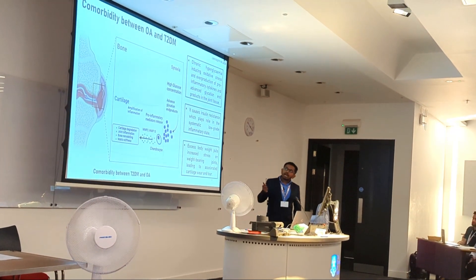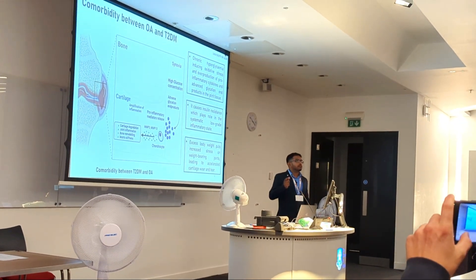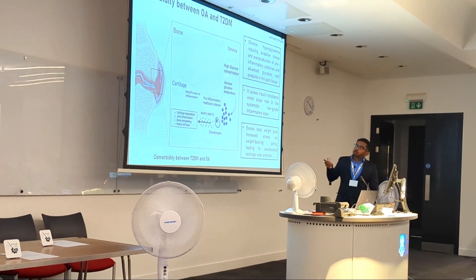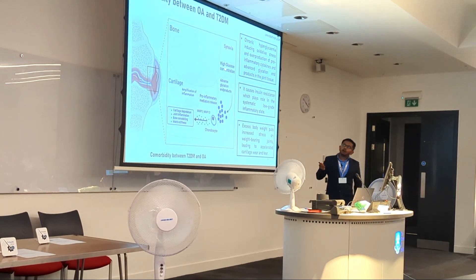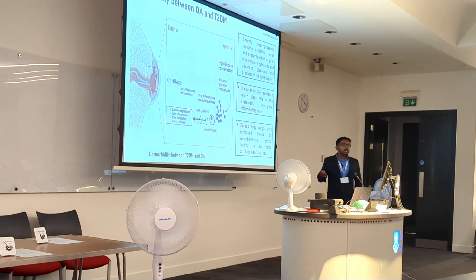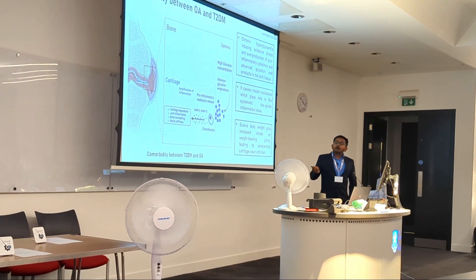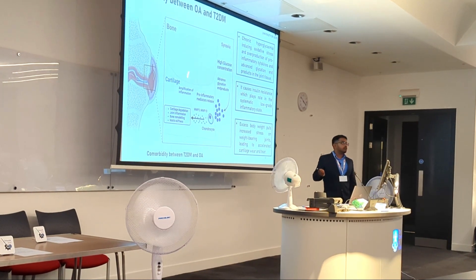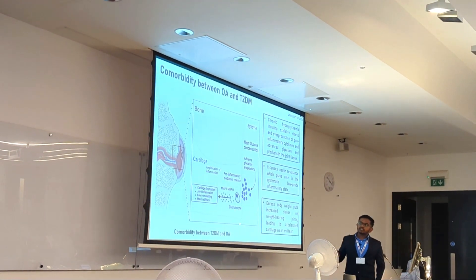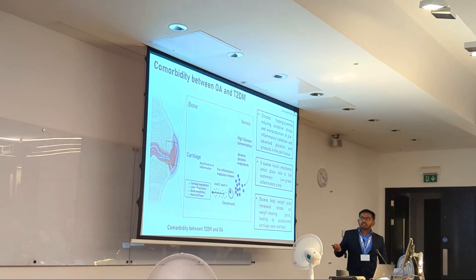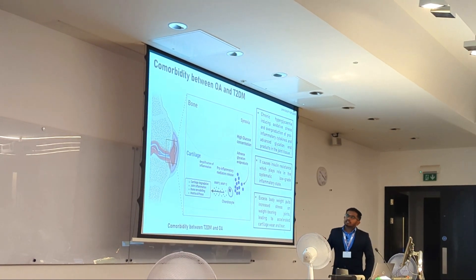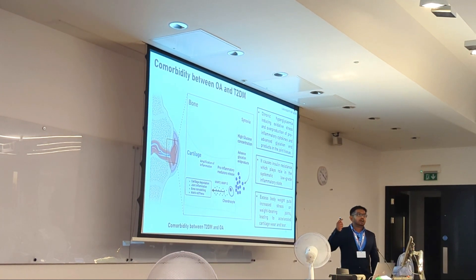Considering these two diseases separately, let us see how they are linked. In the case of comorbidity, a patient who has diabetes is prone to getting osteoarthritis. The high glucose concentration induces oxidative stress which affects the chondrocyte cells in the cartilage. Cartilage is an avascular tissue with only one cell type providing nutrients for its survival, so when oxidative stress affects the chondrocytes, it causes cartilage degeneration.